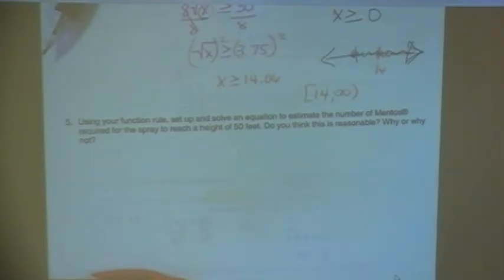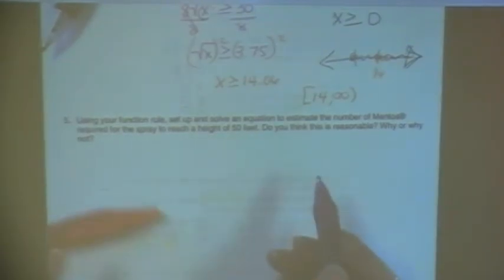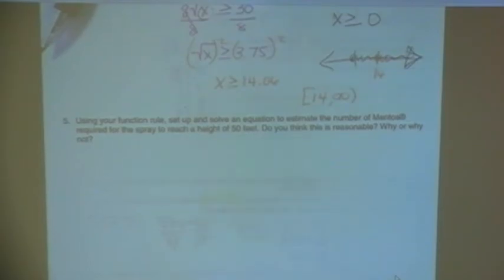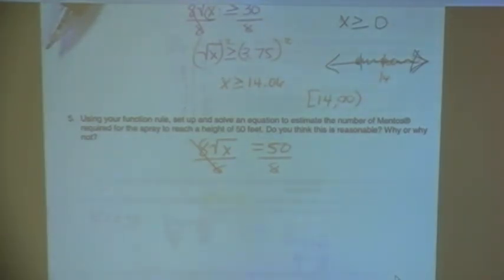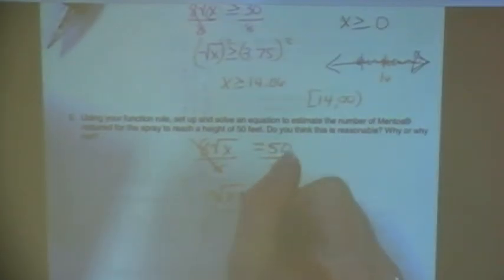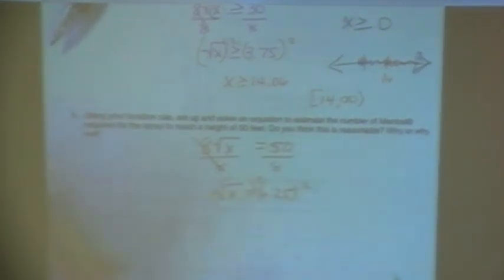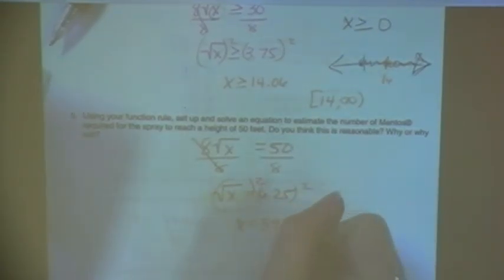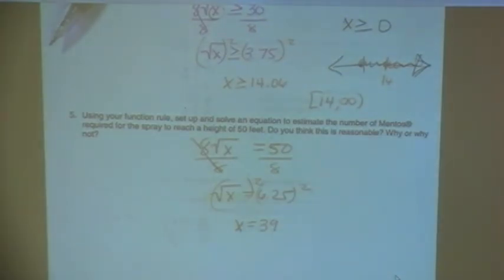Okay so now it says using your function we'll set up and solve an equation. So this time this one was an inequality, this is an equation to estimate the number required for the Mentos to reach fifty feet. So we want it to equal fifty. So same function, we just want it to equal fifty. Divide by eight. Square both sides. I got thirty-nine point zero six, but they're Mentos so you don't want a partial Mentos. Do you think this is reasonable? I don't. I don't think there's any way you could get thirty-nine Mentos inside of one Coke bottle before it's gonna start spewing out. There's no way. I don't think it's reasonable, but hey, maybe it is.